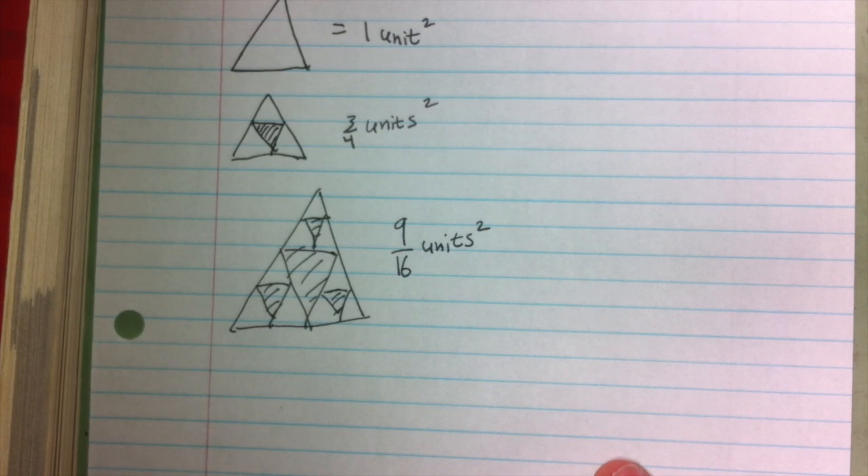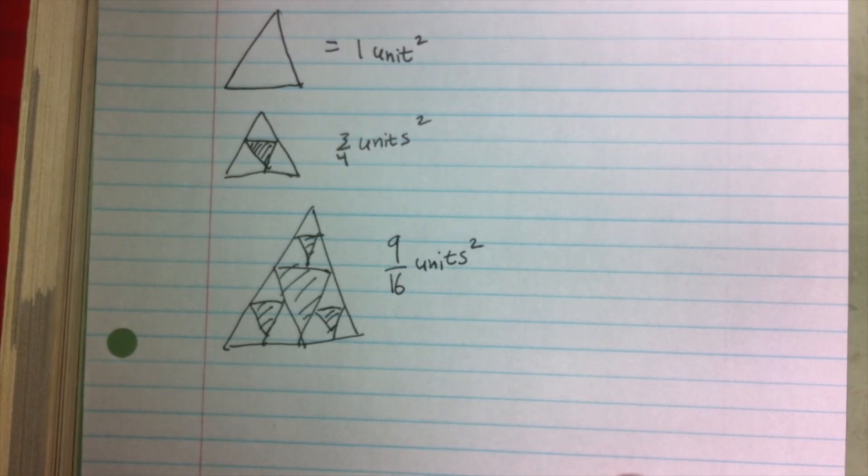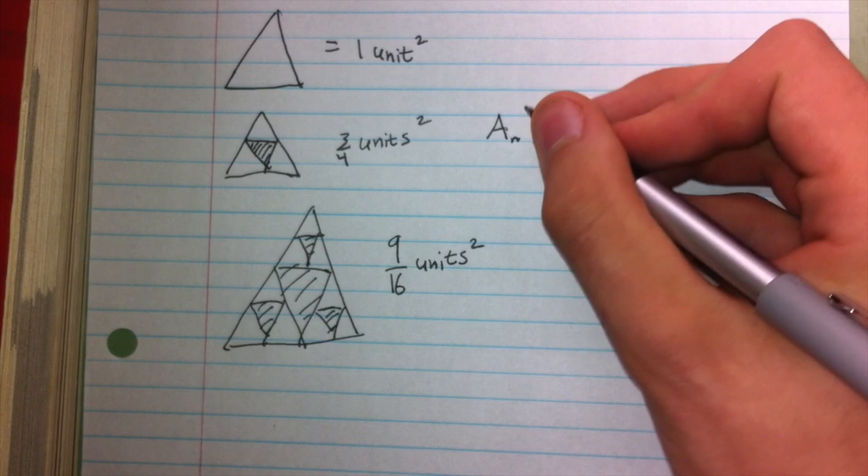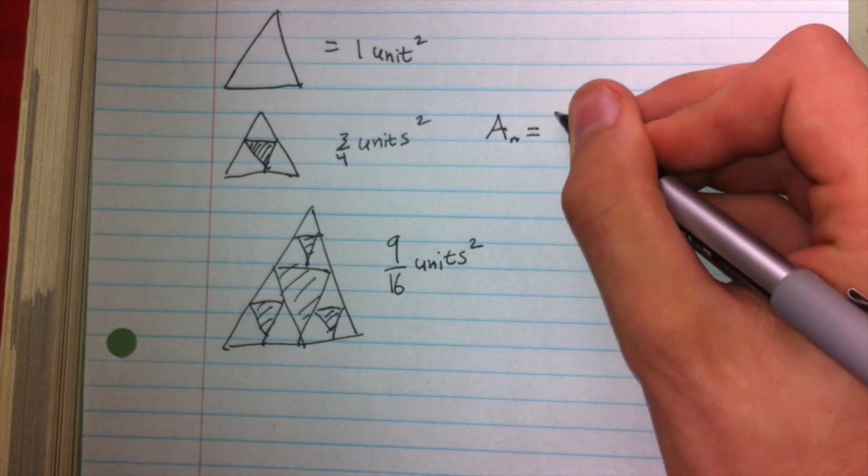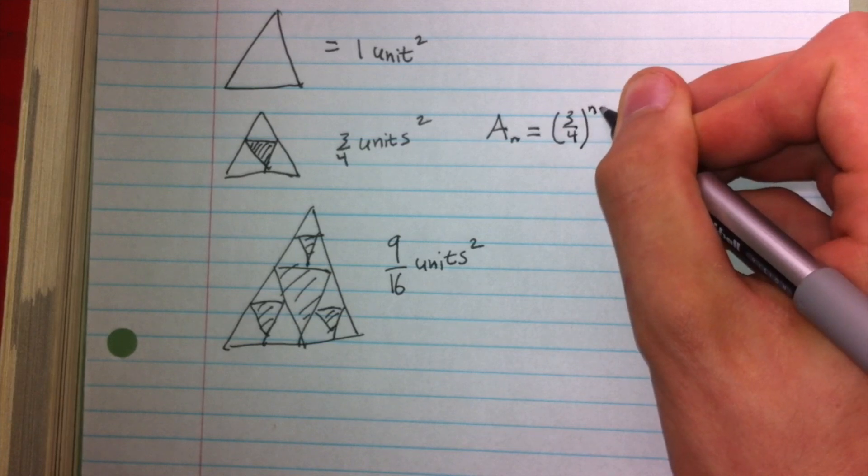And if you notice, each area is three-fourths of the area that comes before it. So we can write an expression for the area of Sierpinski's Triangle, where the area of Sierpinski's Triangle is equal to three-fourths to the n minus one power.